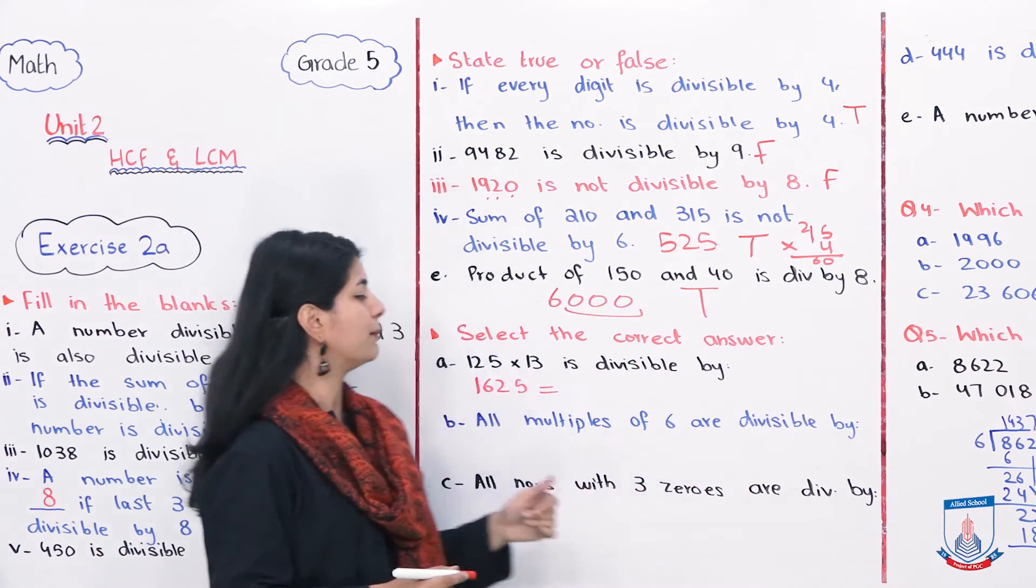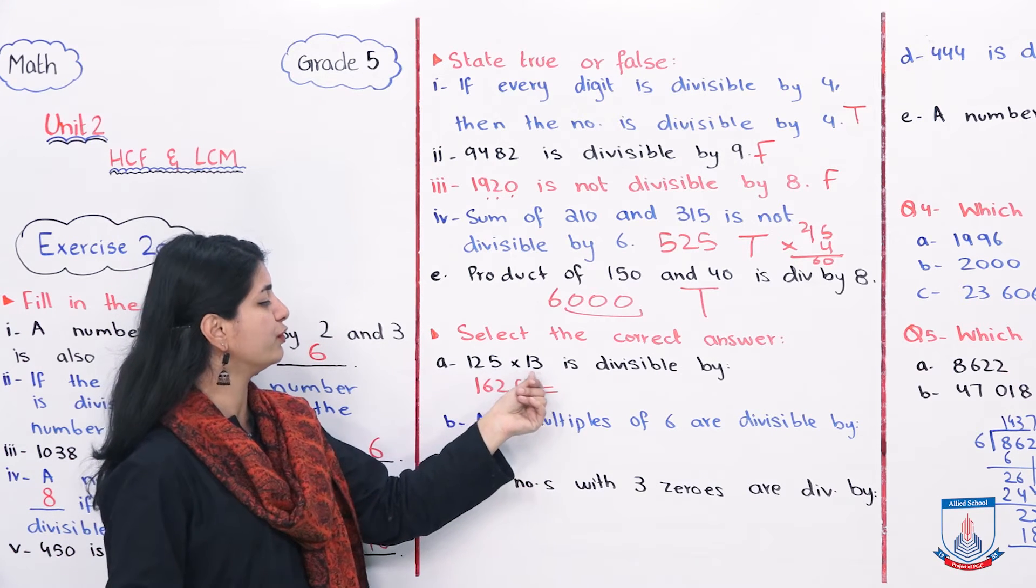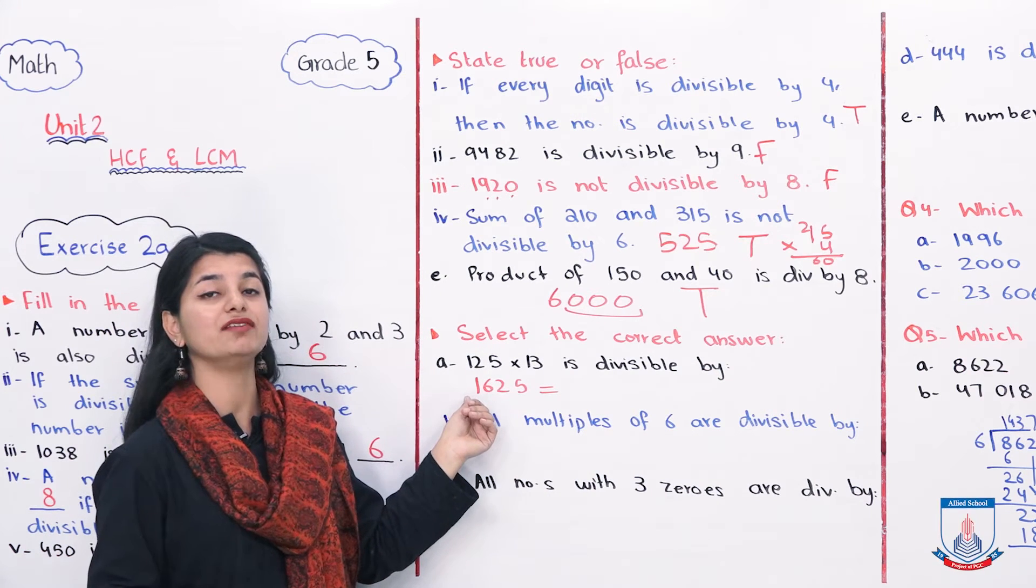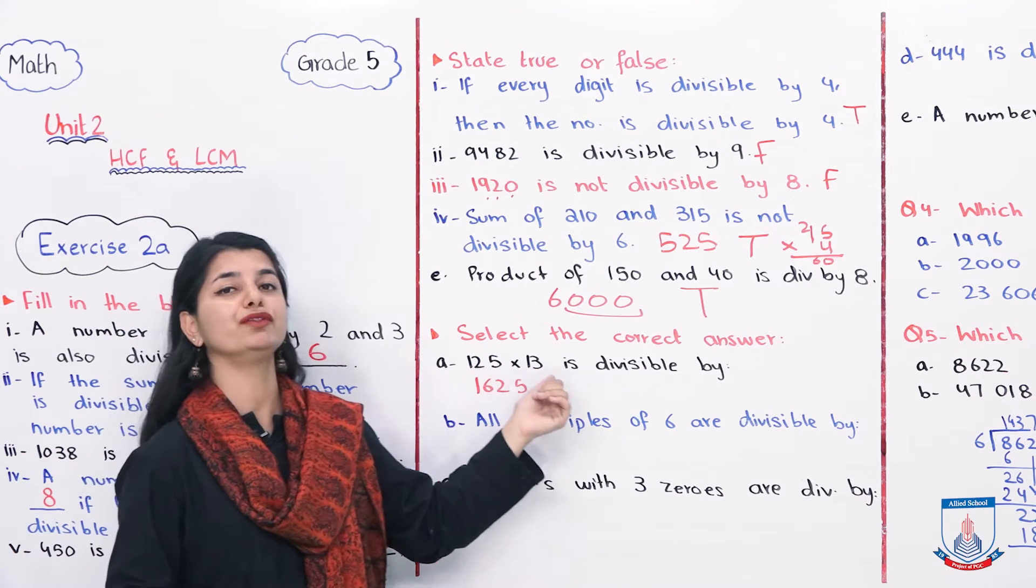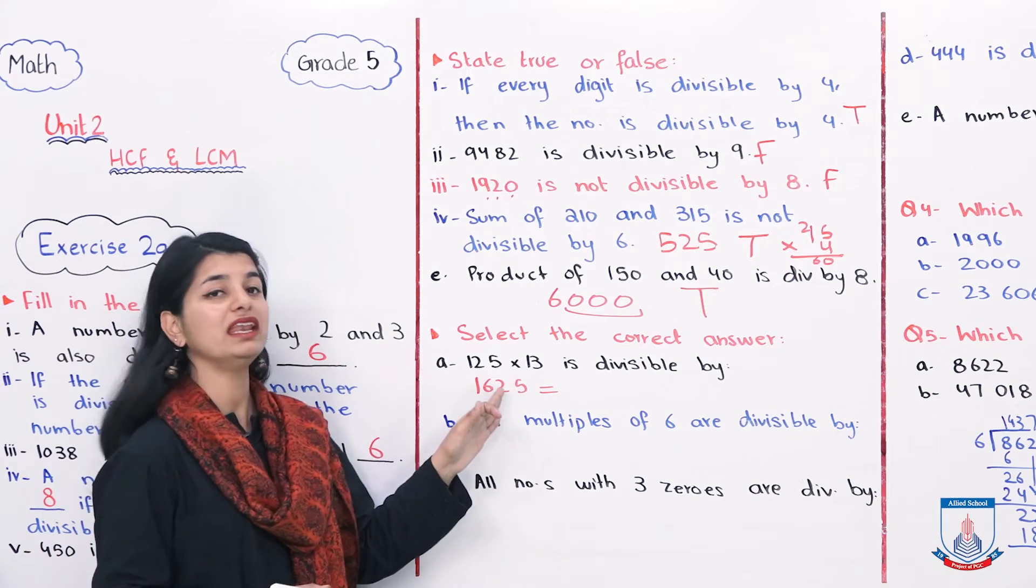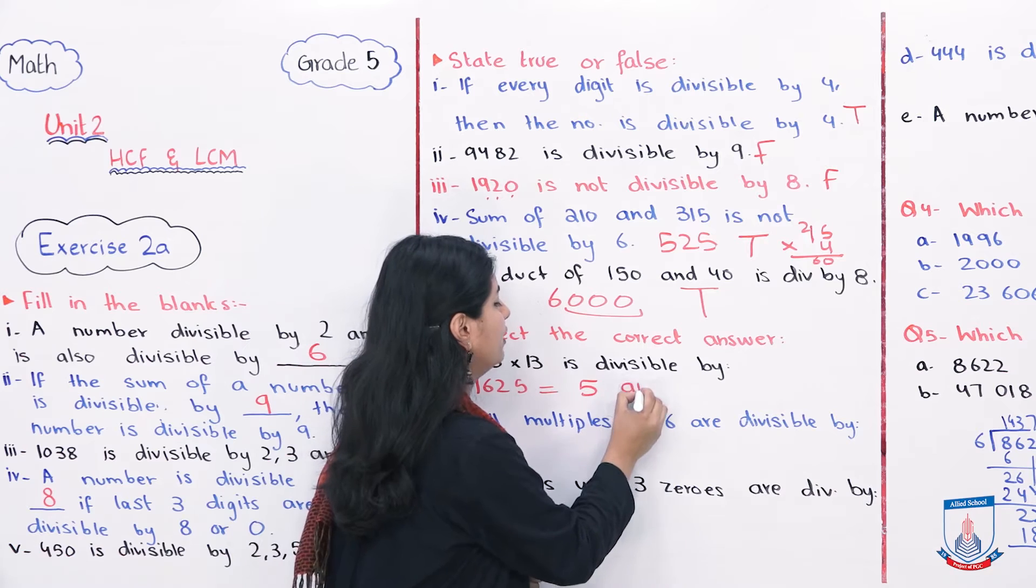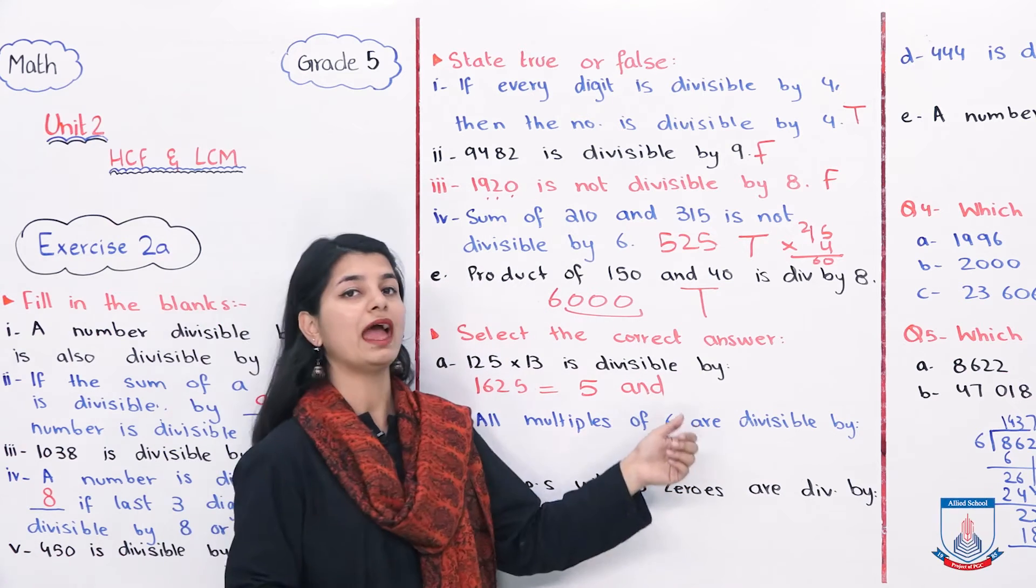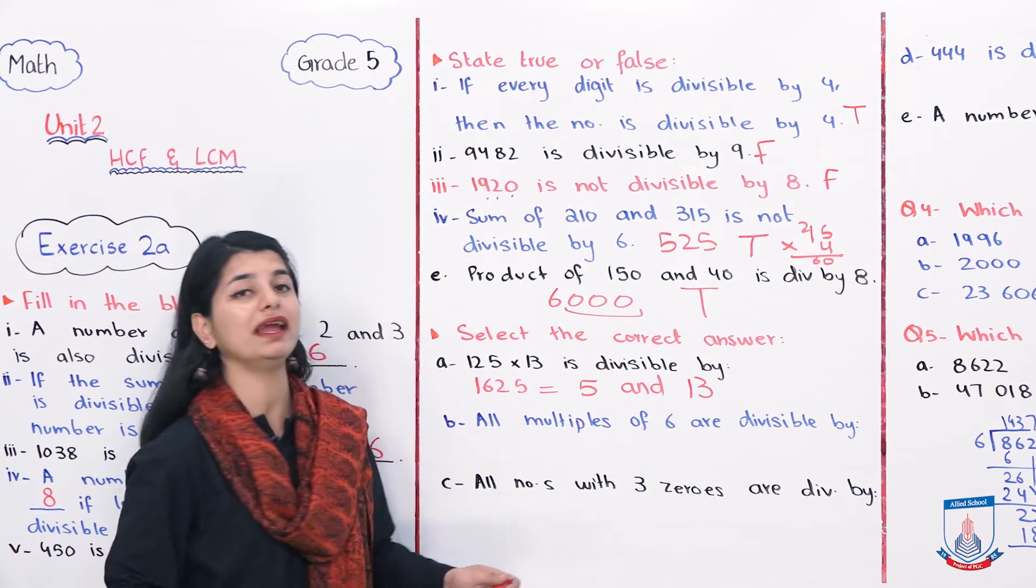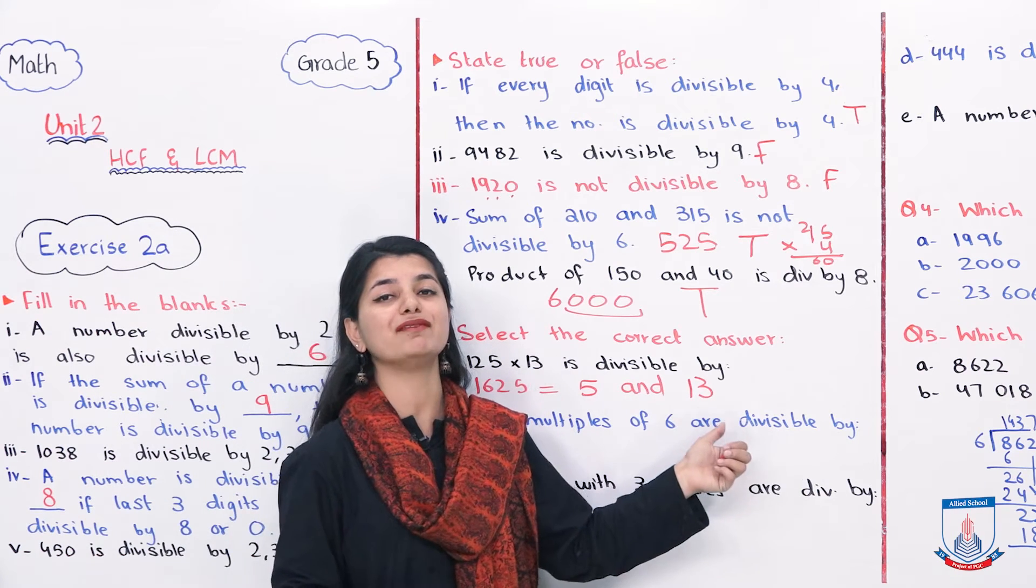Select the correct answer. Now we have to select the correct answer. 125 into 13 is divisible by what? Let's see. 125 into 13, before we solve, the answer is 1625. Now this number is divisible by obviously 5, because the end means 5. And what else? 5 and also 13. If we work it out, it is divisible by 13. So these two numbers are divisible by it. The correct options which mean 5 and 13, you will have to choose.